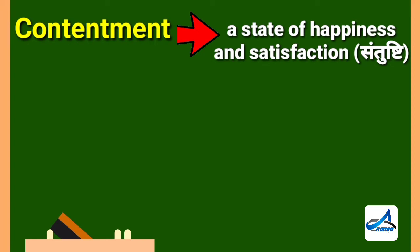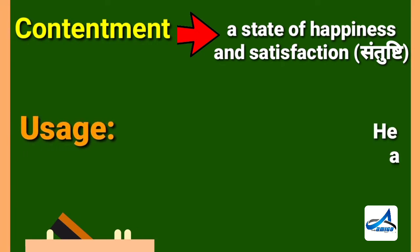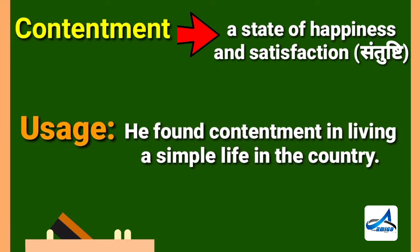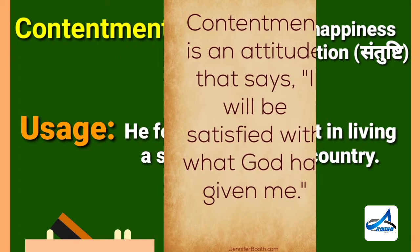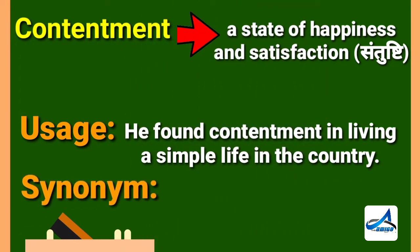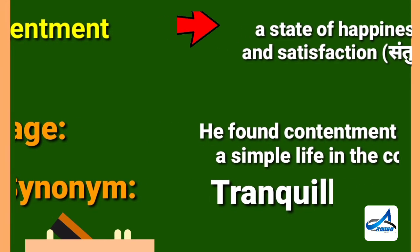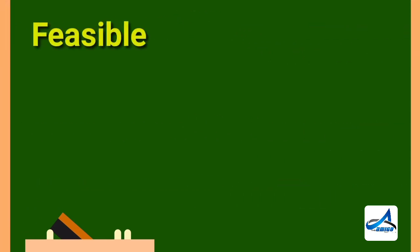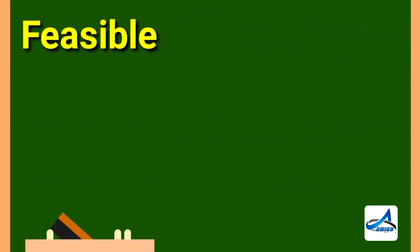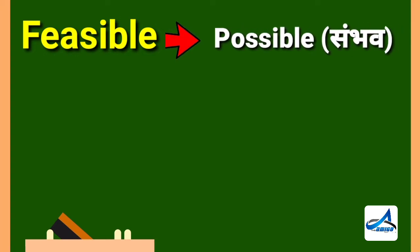The next word is contentment. Contentment means a state of happiness and satisfaction. Its Hindi meaning is 'santushti.' Now look at its sentence: he found contentment in living a simple life in the country. Its synonym is tranquility.